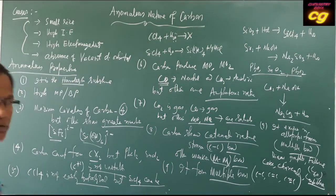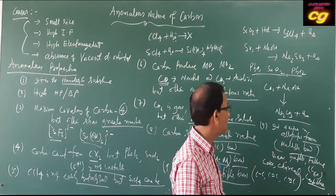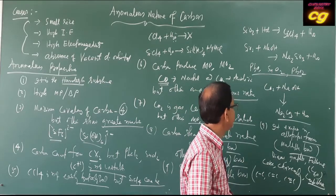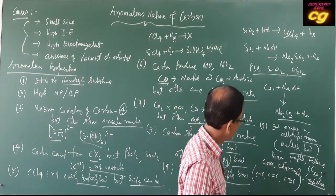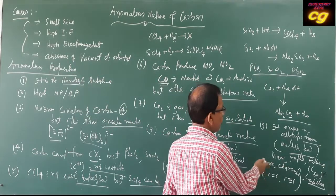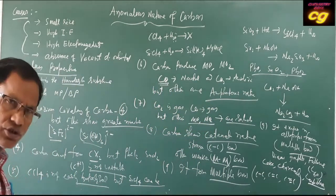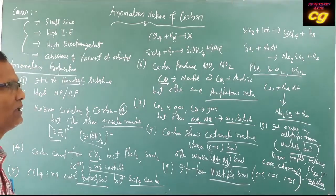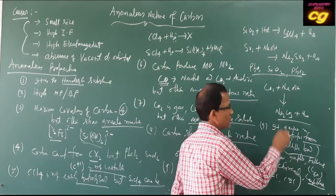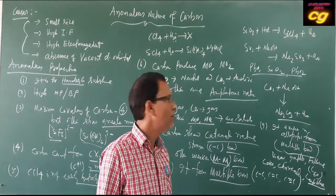The allotropes of carbon include graphite, diamond, and fullerene. Graphite is a good conductor, diamond is a bad conductor, and fullerene is very stable. Other allotropes include coke and charcoal. They all have different structures. Carbon shows allotropic modification due to the formation of multiple bonds, which is possible in the case of carbon.